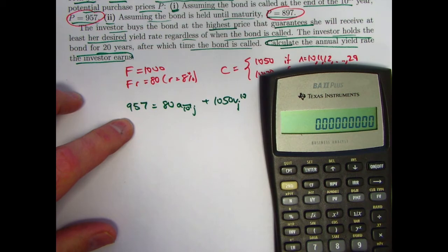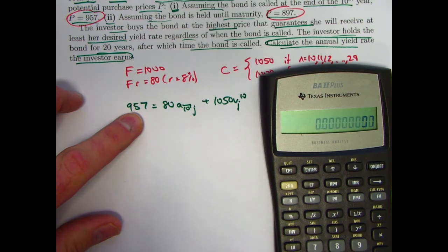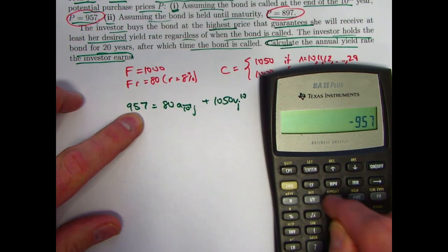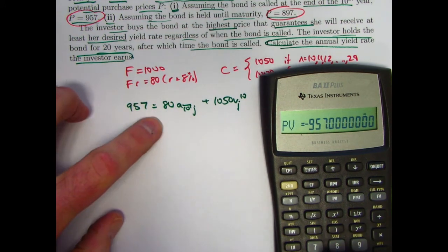So, let's see, N is 10 here, plug in 10 for N. 957 is outgoing money, put a negative sign there, put that in for PV. The 80 and the 1050 is incoming money for you, the investor.